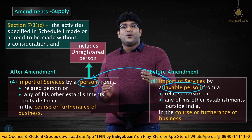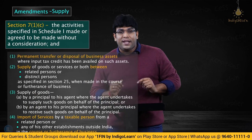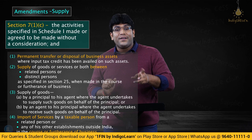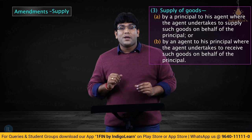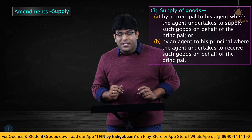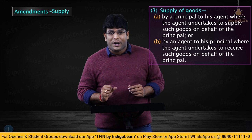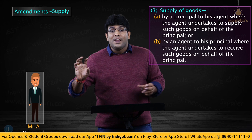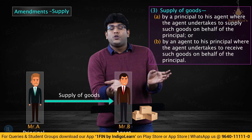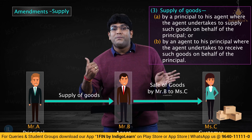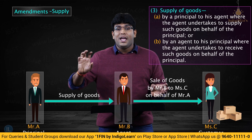Moving forward, section 7.1c read with Schedule 1 talks about transactions regarded as supply even though there is no consideration. The third point deals with supply of goods by a principal to an agent, which is regarded as supply even though there is no consideration. For example, there is Mr. A who is a principal and Mr. B who is an agent. Goods move from A to B, then B will supply goods to the customer on behalf of the principal. Supplies made by agent on behalf of principal shall be included in the aggregate turnover of the agent.